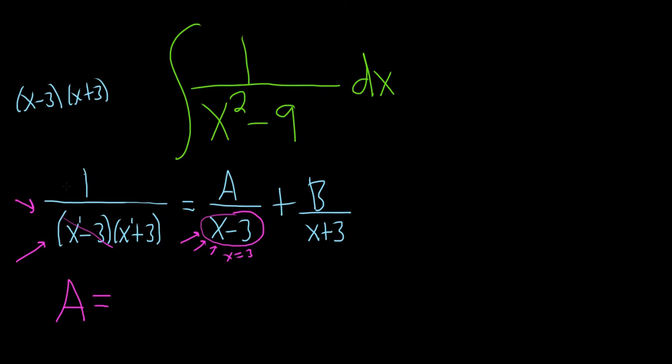So what you do is you plug a 3 in over here on the left. So 1 over 3 plus 3. See, if you hadn't covered up the x minus 3, you would get 3 minus 3 and you would get 0. So that's why you cover it up and then you plug in a 3 everywhere else. So you just get 1 sixth.